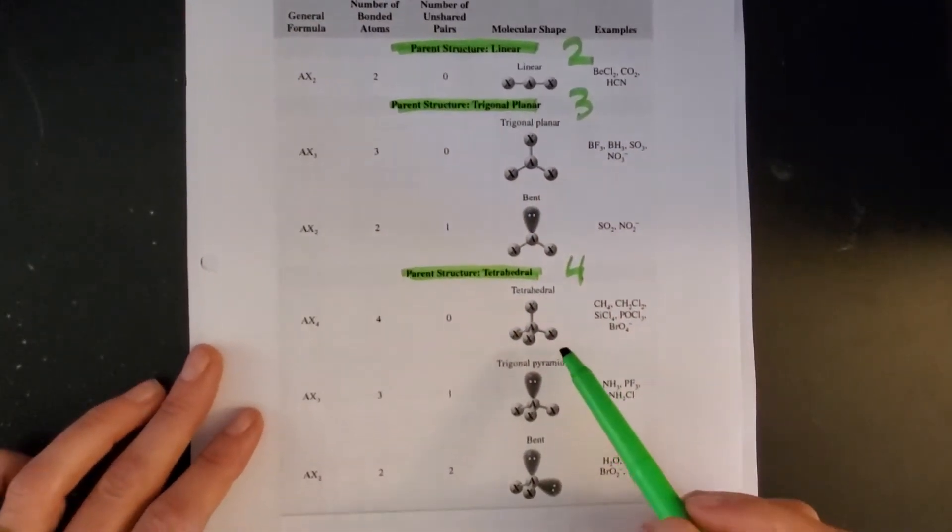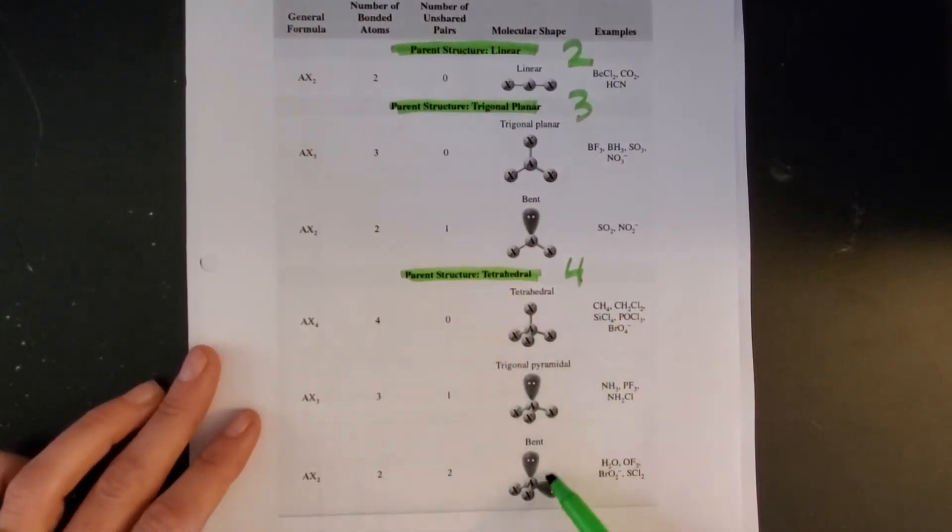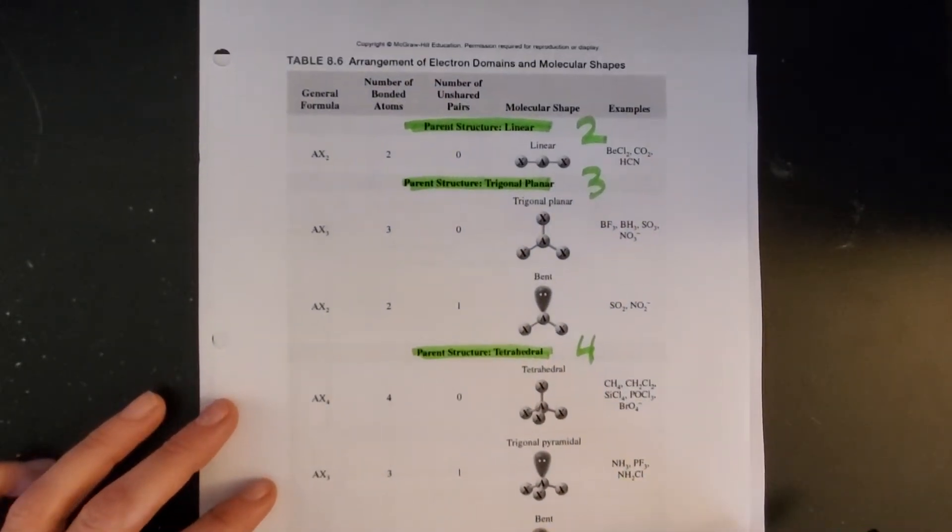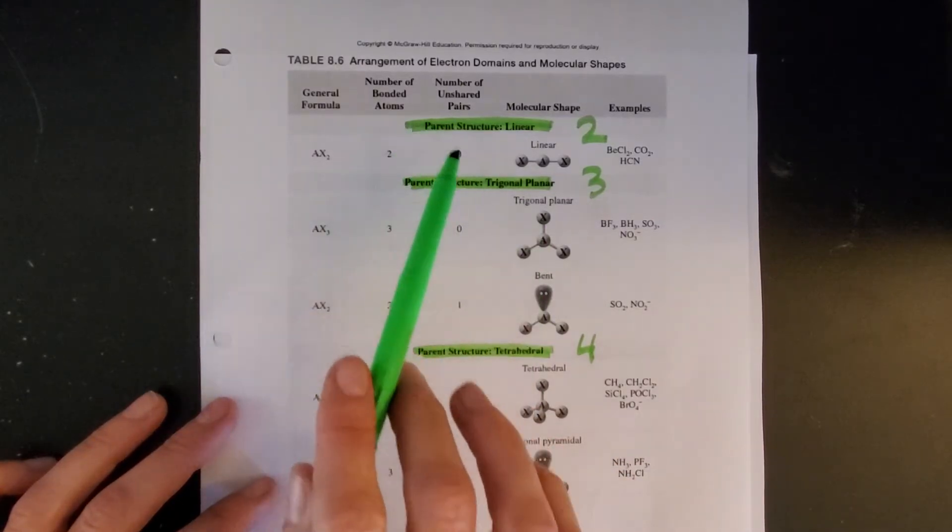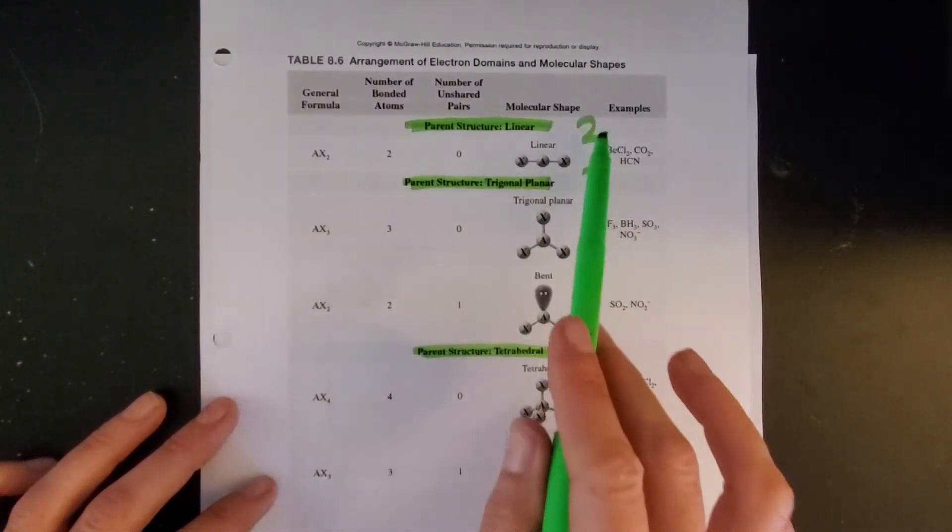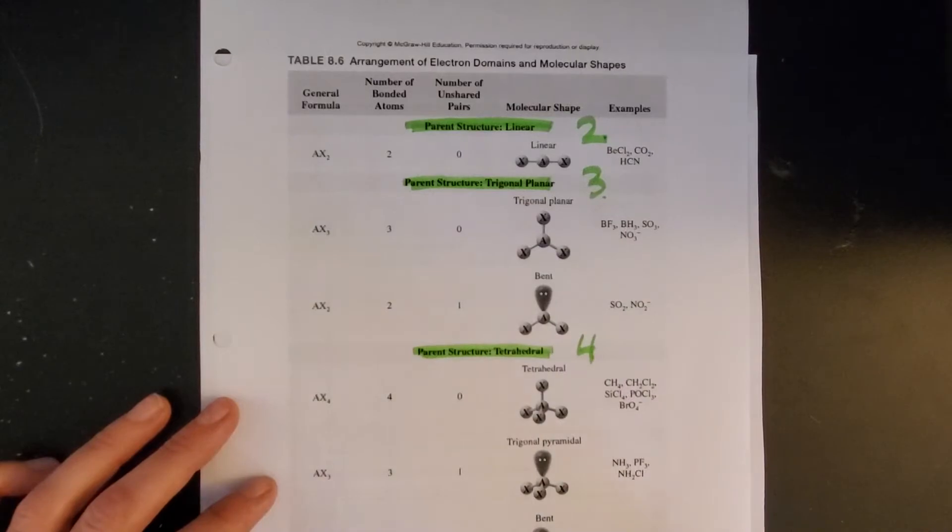And then if we have four electron groups we're looking at tetrahedral. What those tetrahedral molecule geometries look like depends on how many lone pairs. So you have three options for electron geometry: linear, trigonal planar, or tetrahedral depending on how many groups you have that need space.